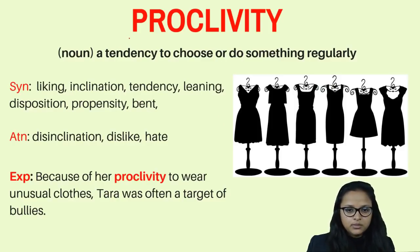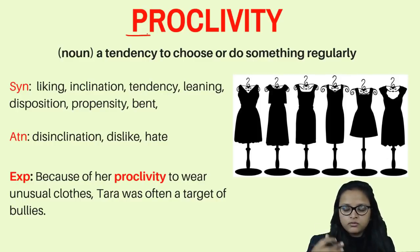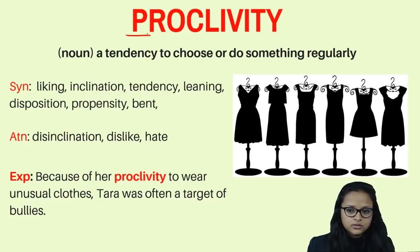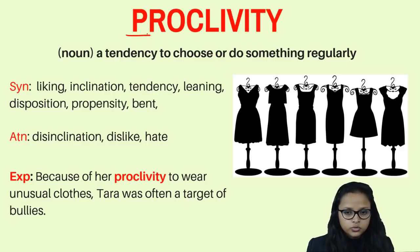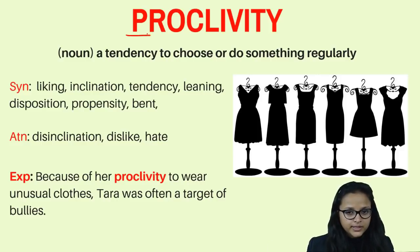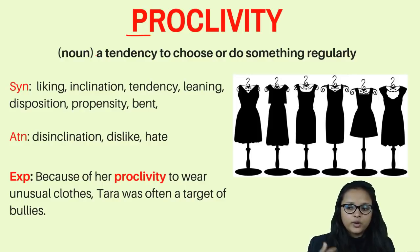Proclivity means a tendency to choose or do something regularly. We all have a habit of doing something we like to do again and again. For example, I like to wear black clothes, so whenever I'm choosing or buying clothes, I pick the black ones always. So it is my tendency to choose or do something regularly — it is my proclivity.